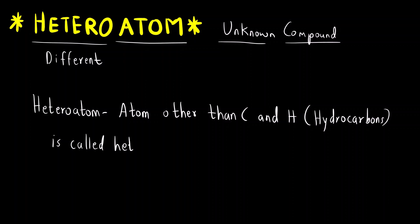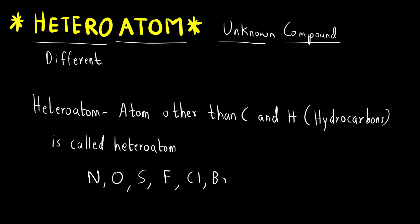What are the examples of heteroatoms? Examples include nitrogen, oxygen, sulfur, and halogens like fluorine, bromine, iodine, and so on. Any atom present in an organic compound other than carbon and hydrogen is a heteroatom.